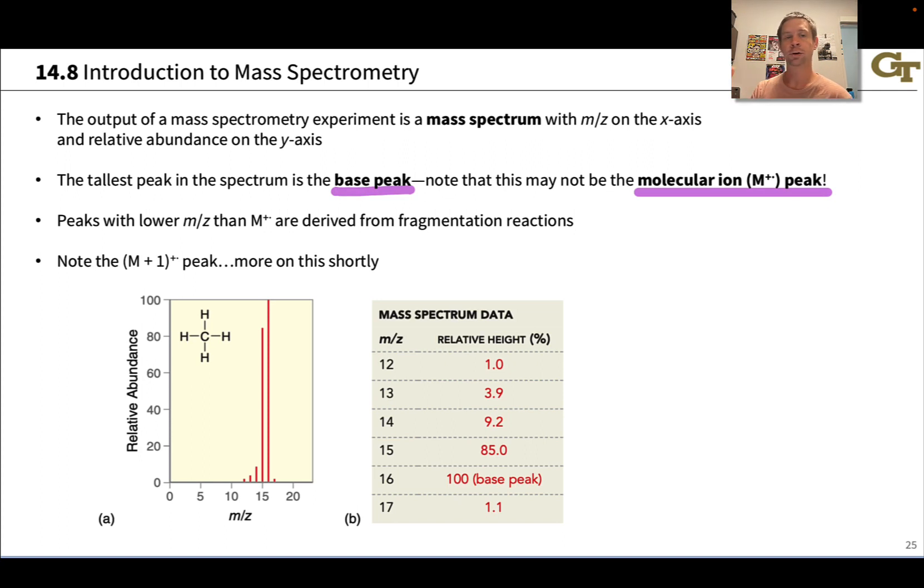If the molecule undergoes a lot of fragmentation, the base peak will not match the molecular ion peak. But methane can't really fragment, so the base peak is the molecular ion peak and it corresponds to a mass to charge ratio of 16.